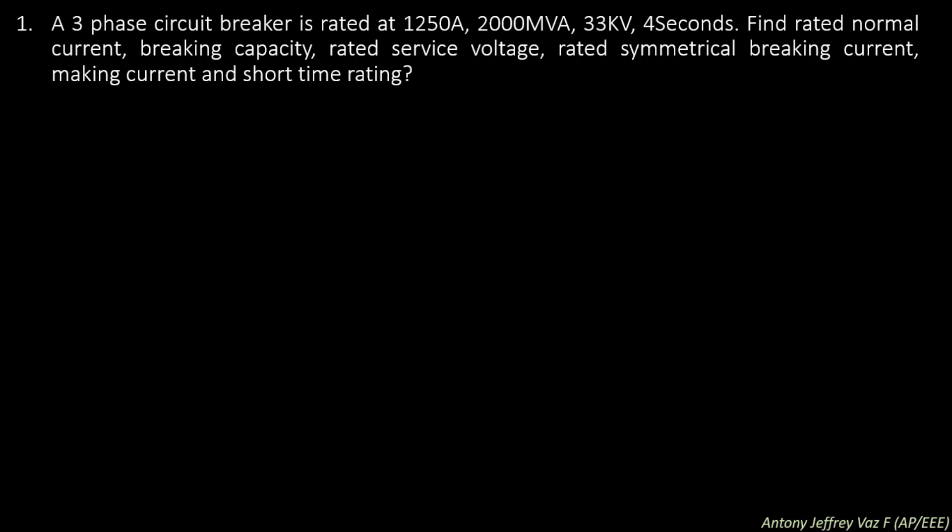A 3-phase circuit breaker is rated at 1250 A, 2000 MVA, 33 kV, 4 seconds. Find the rated normal current, braking capacity, rated service voltage, rated symmetrical braking current, making current, and short time rating.